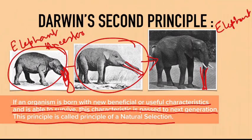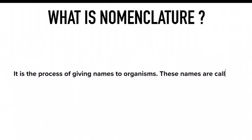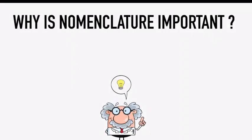Now let's jump into the second part of today's lesson — we are going to discuss what is nomenclature. Nomenclature is the process of giving names to organisms, and these names are called scientific names. Nomenclature means giving names to organisms, and these are not normal names — these are scientific names.